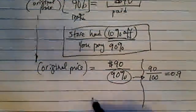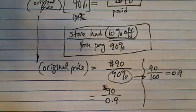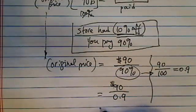Okay, that's 0.9. So let's go back over here. That's $90 divided by 0.9. This turned out to be $100.